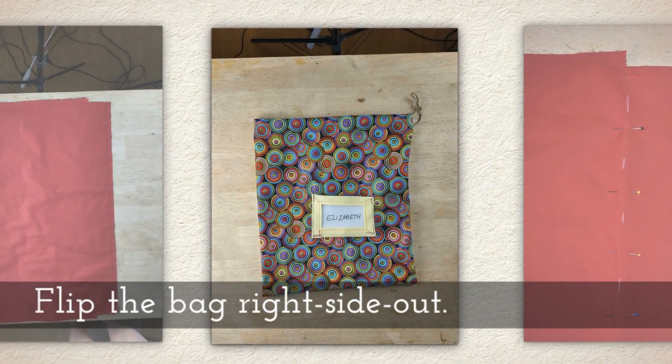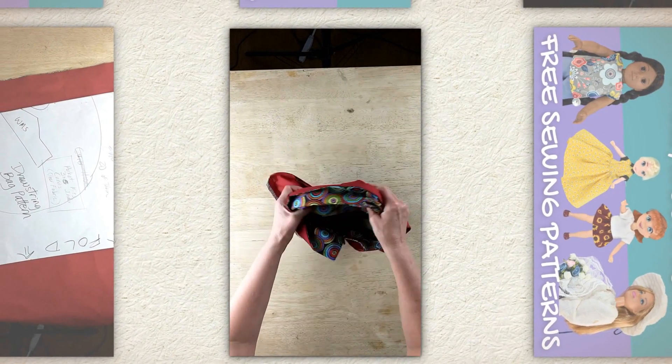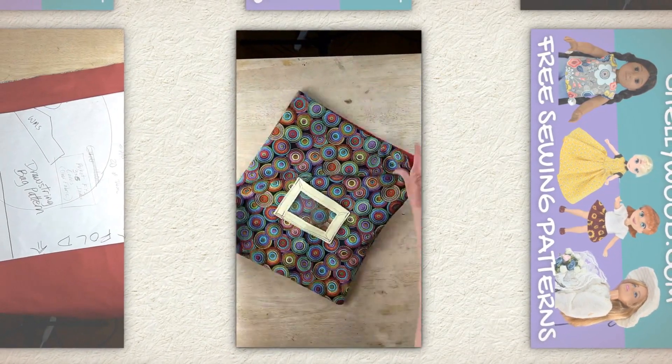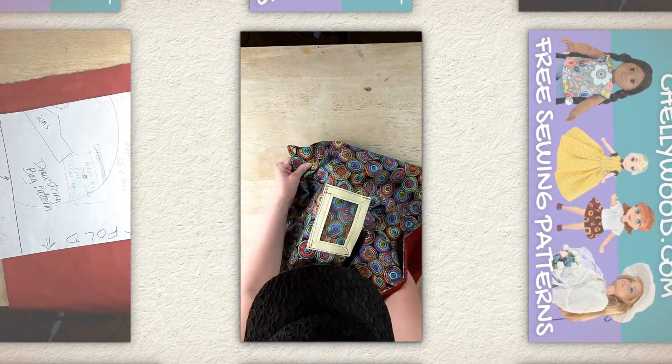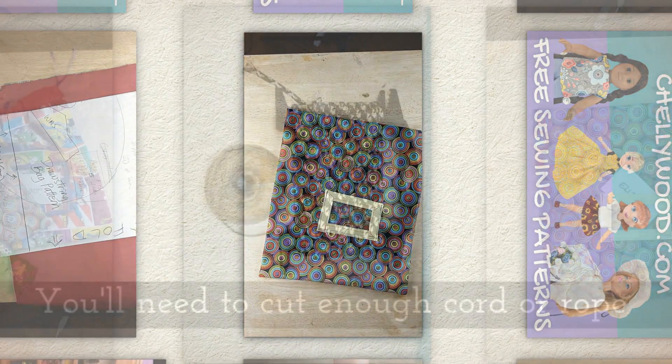Flip the bag right side out. I like to use a chopstick to help me with this. It can help you poke the corners out, but you want to do it gently so that the chopstick doesn't poke all the way through the corners. I just gently poke those corners out, and you can see that the casing is at the top.